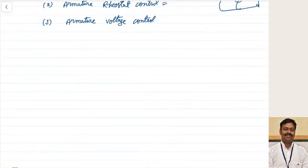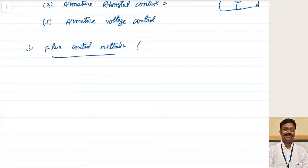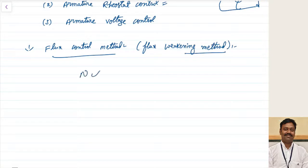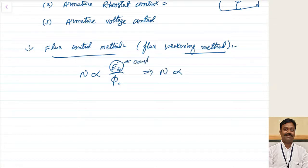The first method is the flux control method, also called the flux weakening method. We know speed is proportional to Eb divided by phi. If we maintain Eb constant and only vary the flux, then speed is inversely proportional to flux. So we can control speed by inversely controlling the flux.